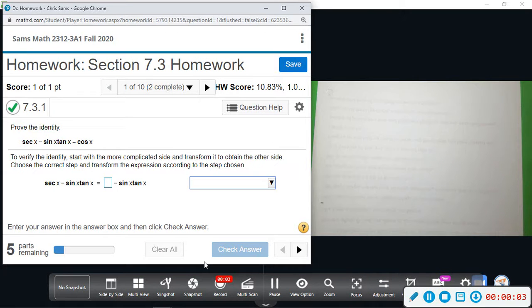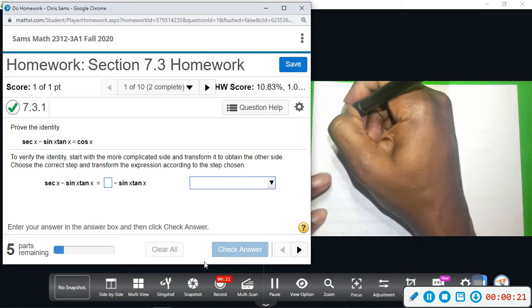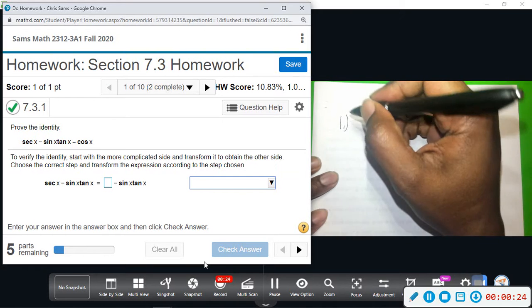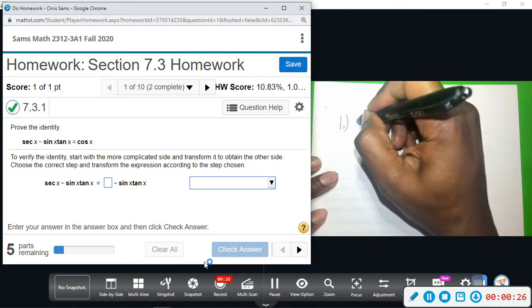Alright, this is section 7.3. We're going to be doing trig identities and try to prove the identities given. We can do these by hand. I'm going to attempt to match what the computer is and give the justification, but there are several ways. This first one, they give you fill in the blanks, so they're letting you know what step to take first.